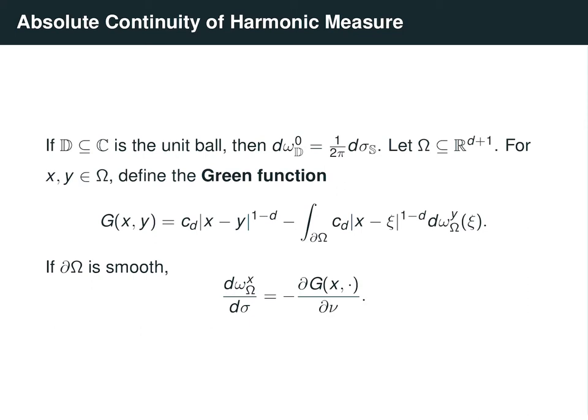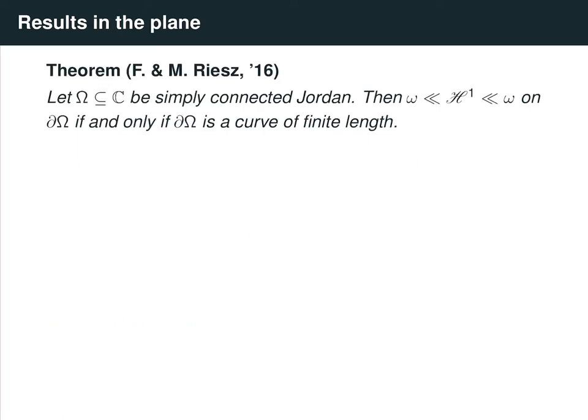This opens the question: what are the general conditions for when we can ensure that harmonic measure is absolutely continuous with respect to d-dimensional Hausdorff measure, or the natural surface measure on the boundary of a domain in R^(d+1)? This problem has a long history and started in the complex plane. In 1916, the F&M Riesz brothers showed that for a simply connected Jordan domain, harmonic measure is mutually absolutely continuous with respect to Hausdorff measure on the boundary if and only if the boundary is a curve of finite length — in other words, the boundary is a rectifiable curve.